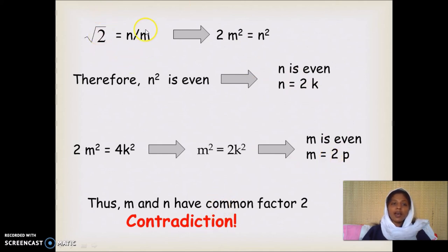To what we have assumed that n and m are integers which do not share a common factor. Now we have arrived at a fact or incorrect conclusion that n and m have common factor.